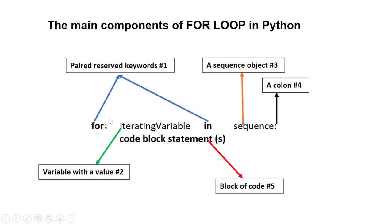After the 'for' keyword we enter a variable which is the iterating variable, and that is followed by 'in'. We then follow it up with a sequence that the loop will work on. So the first component is the reserved keywords 'for' and 'in', the second is the iterating variable, and the third is a sequence object. After the sequence object we follow it up with a colon — that is the fourth component.